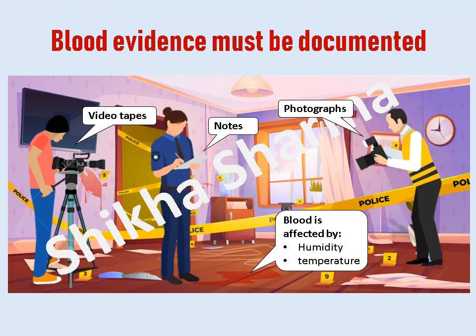Before handling any blood evidence, its location and physical state must be documented by some combination of notes, diagrams, video tapes, and photographs. Other details may be pertinent to record as well, such as the temperature, humidity, or existence of multiple severe wounds but little blood. The latter condition suggests that the person was killed somewhere else or that an attempt was made to clean the victim and/or scene.